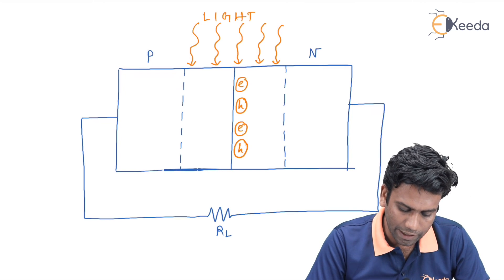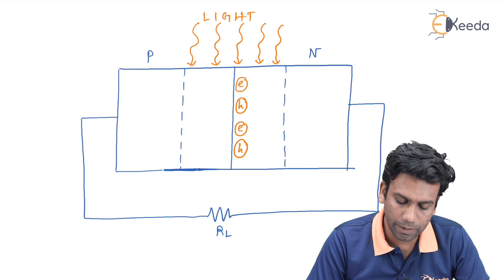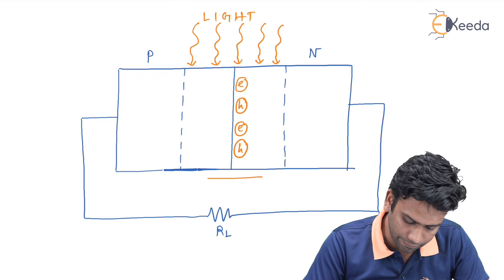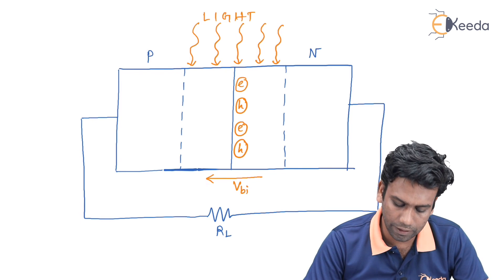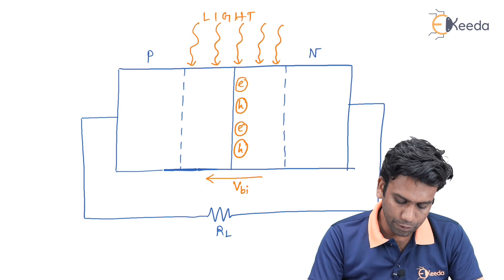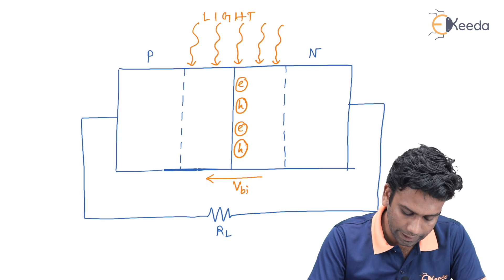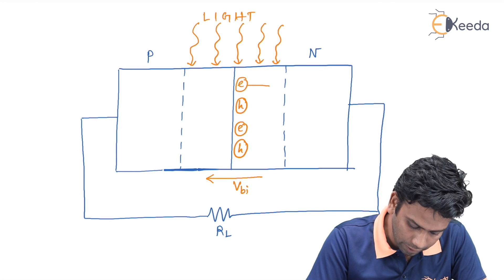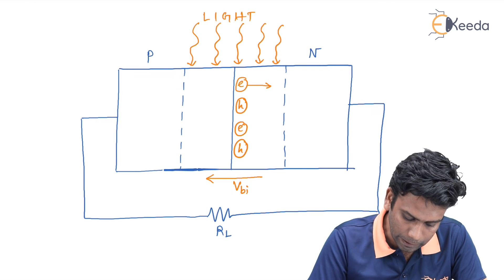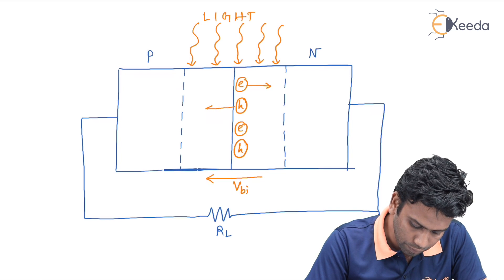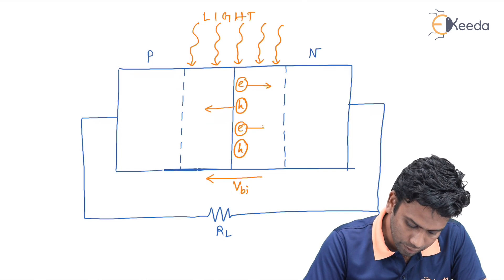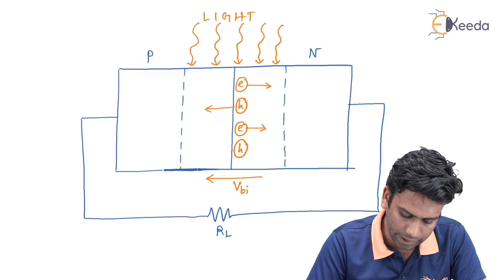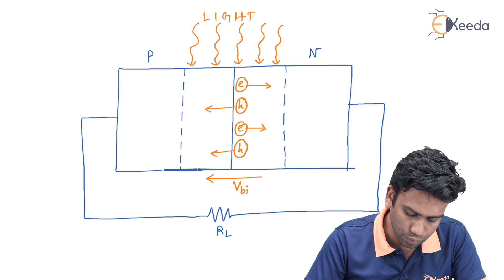As we know, inside the depletion region there will be a built-in electric field directed from n to p. Due to this built-in electric field, the electron tries to move in the opposite direction of the field and the hole moves in the same direction. So electrons will move towards the n-side and the holes will move towards the p-side.